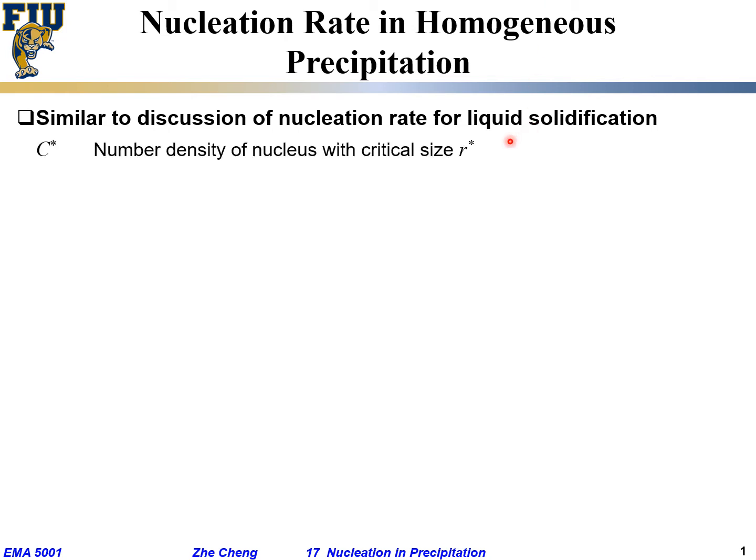We are defining a few terms. The first one is C*, the number density—or concentration in another way—number density of nucleus with critical size of r*.